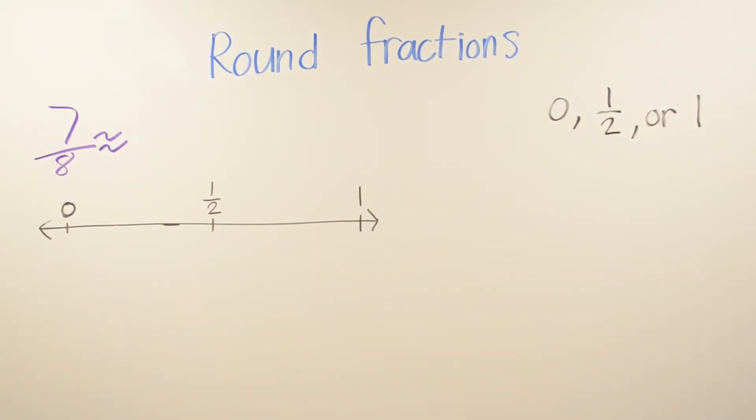In this example, we're going to round the fraction 7 eighths. So we're going to start by knowing what is half of 8. Half of 8 is going to be 4 over 8. So if I know right away that the half of 8 is 4, then we know right away that we're going to start from 4 to 8 because it's asking us for 7 eighths. So there's no need for me to go ahead and write more on the number line. So I can go ahead and start from 4 to 8.